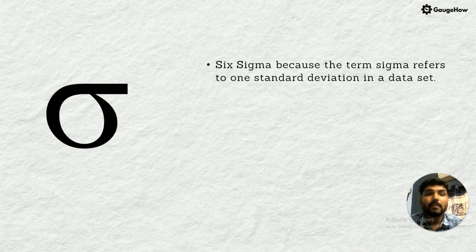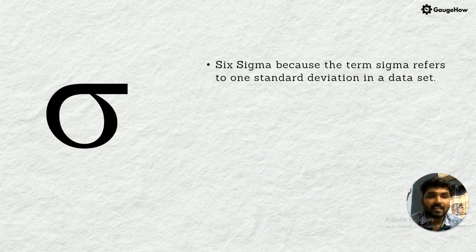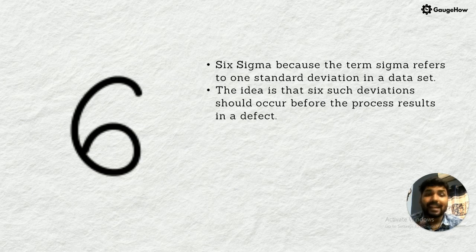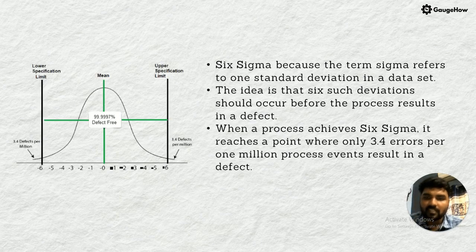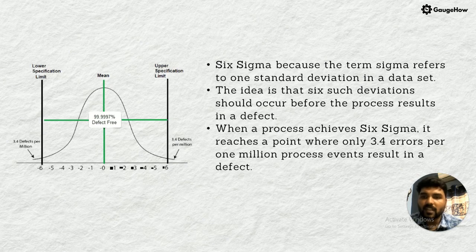Six Sigma because the term sigma refers to one standard deviation in a data set process. The idea is that six such deviations should occur before the process results in a defect. If you want to standardize the process efficiency, you will definitely get the six such deviations. Here you can see positive side six and negative side six, lower specification and upper specification. This is one best example of any process with sigma value 99.999997 percentage defect-free process.